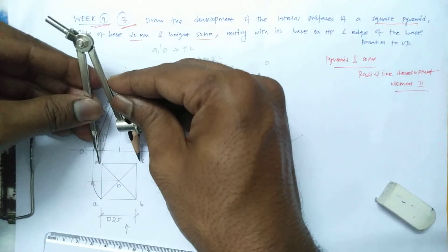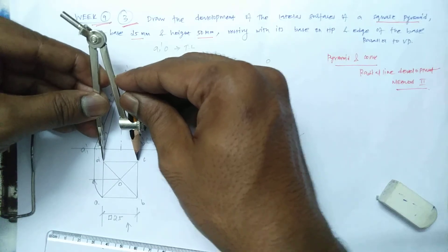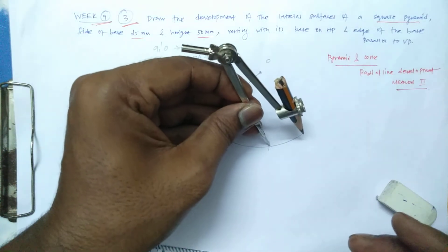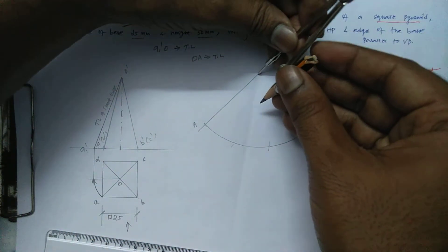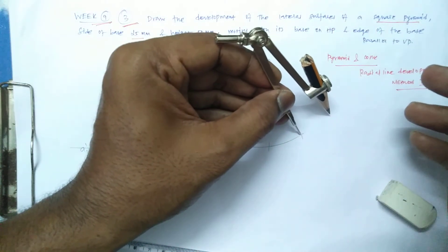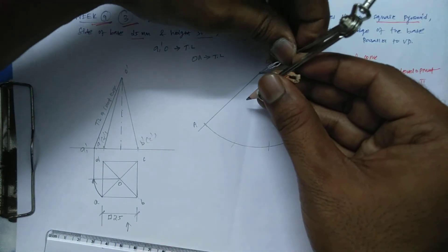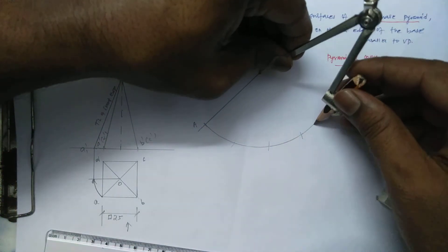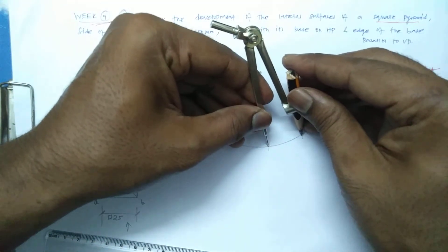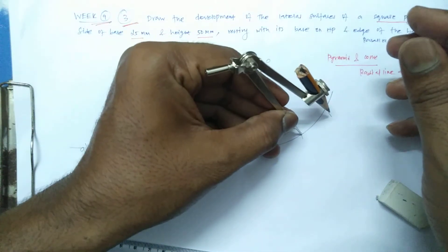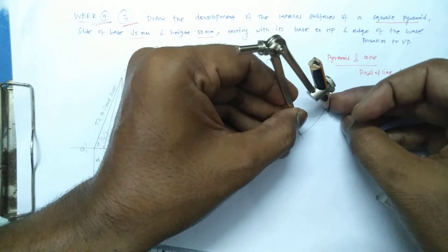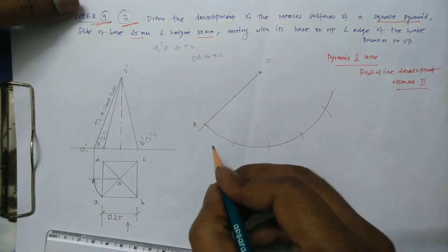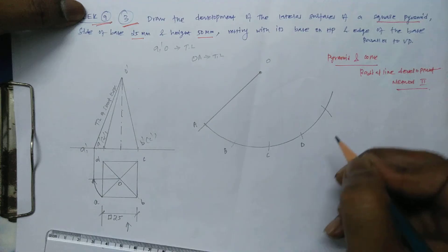Now you measure the distance of 25mm because the base is 25mm. Keep A as a center, 25mm as a radius. Similarly, these are all the 25mm. Now we just got the point. That is nothing but B, C, D, again A.